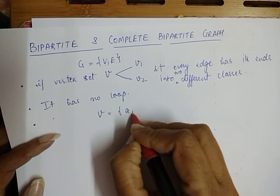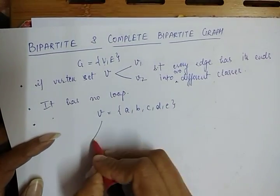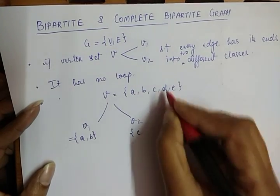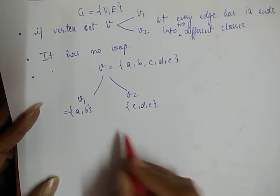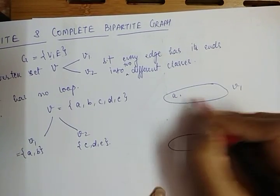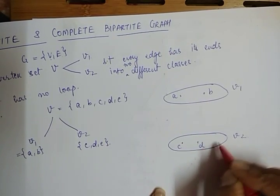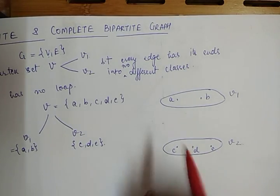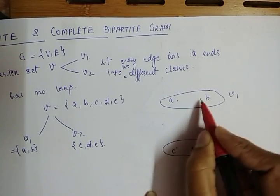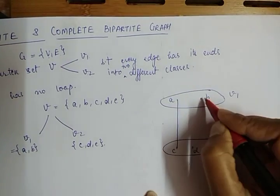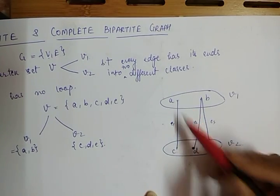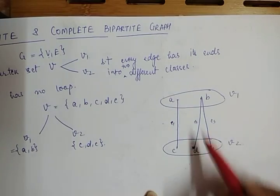For example, if you have main vertex set V containing A, B, C, D, and E, I will split it into two parts: V1 and V2. V1 has vertices A and B, and V2 has the remaining vertices C, D, and E. Now every edge must have its ends in two different classes. If I join A and B they would both be in V1, so that would not be a bipartite case. But edges E1, E2, and E3 each have one end in V1 and one end in V2 — both ends are in different classes. So we call this type of graph a Bipartite Graph.